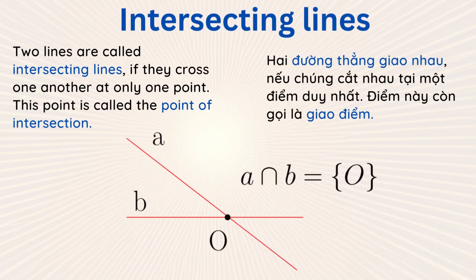Two lines are called intersecting lines if they cross one another at only one point. This point is called the point of intersection. In the picture, one has two lines, A and B, and they intersect at the point O.